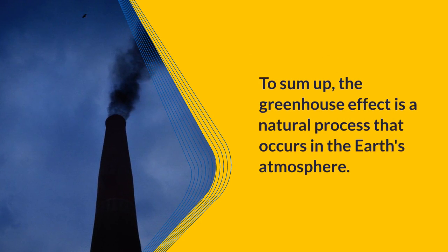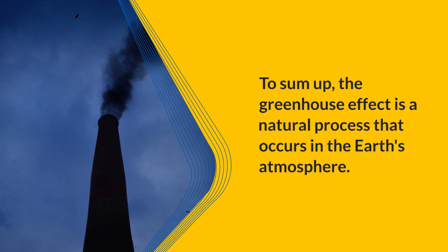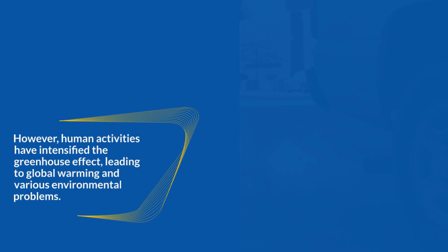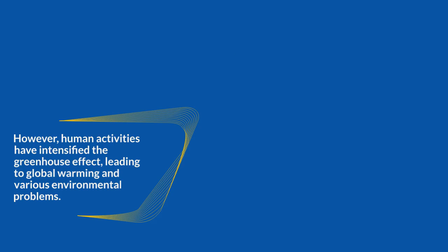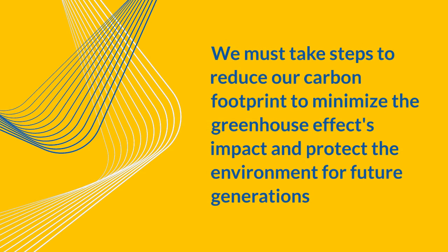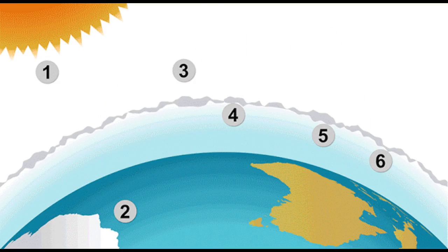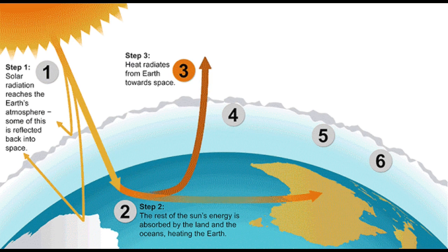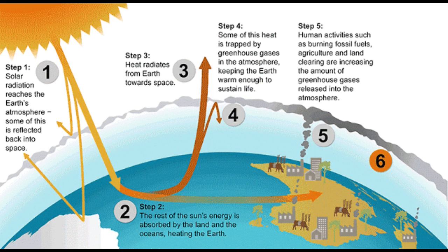To sum up: the greenhouse effect is a natural process that occurs in the Earth's atmosphere. However, our activities have intensified this effect and it is leading to various problems for our environment. We must therefore take steps to reduce our carbon footprint, minimize the greenhouse effect's impact, and protect the environment for future generations — your kids and your kids' kids. I hope you learned a lot about the greenhouse effect — join me in the next video where we'll talk about another fascinating geographical topic.